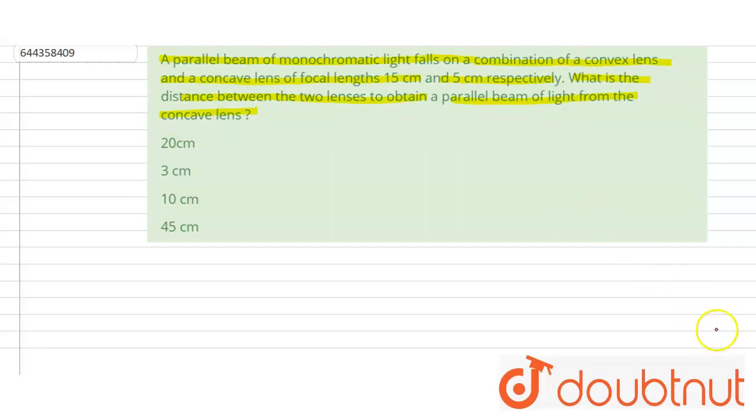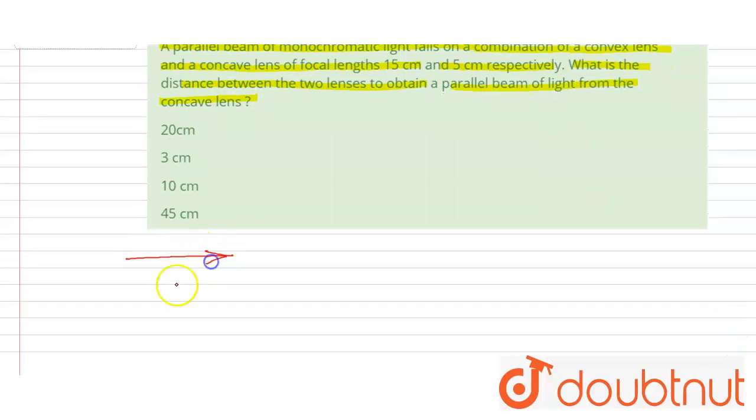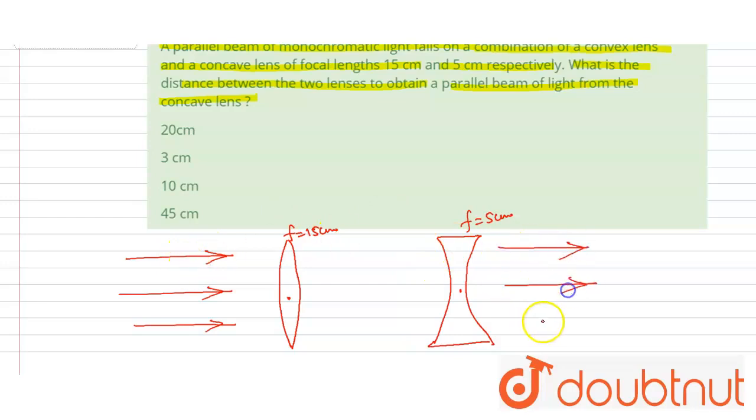In the question, it is said that a parallel ray is coming and between them a convex lens is put of focal length 15 cm and a concave lens is placed of focal length 5 cm. After passing from these two lenses, the ray will go in the parallel directions. So we have to find the distance between them. Let's suppose the distance is D.